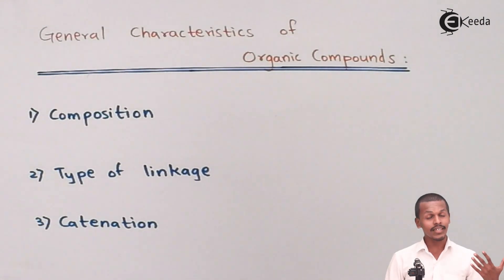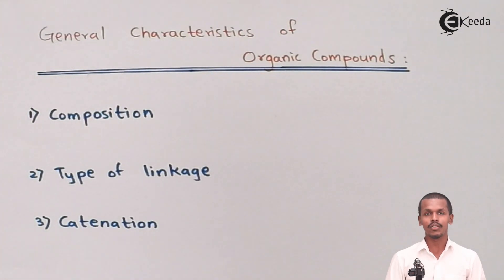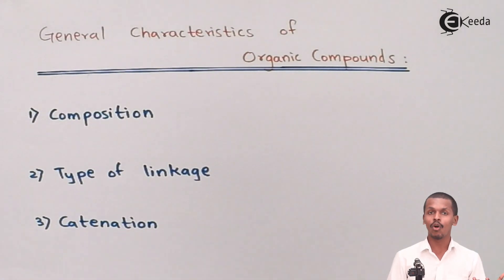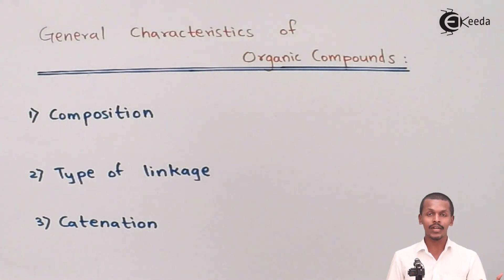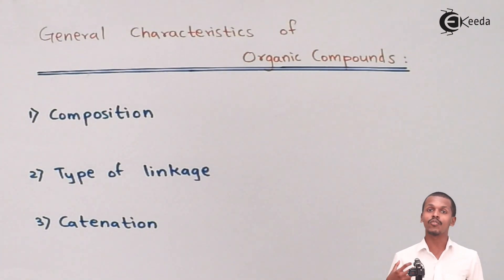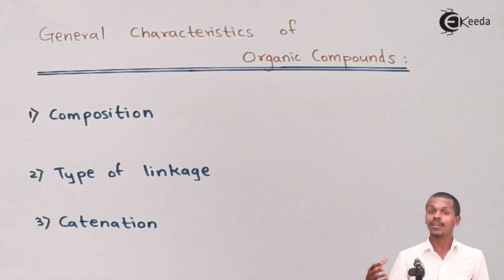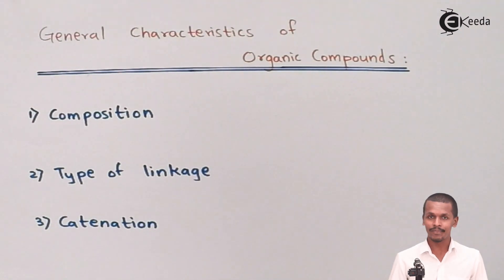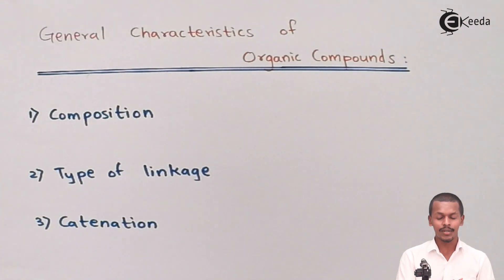The next characteristic is the type of linkage. Carbon has the capacity to not only form one bond but multiple bonds — carbon-carbon single bond, carbon-carbon double bond, and carbon-carbon triple bond. Carbon can also form linkages with other elements like oxygen and nitrogen. Some bonds are weak and some are strong, giving rise to various types of linkages in organic compounds.